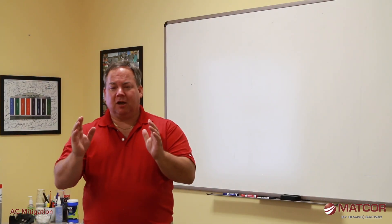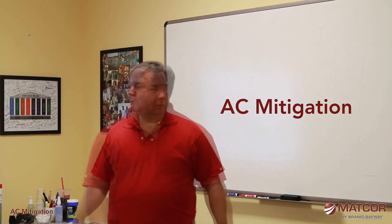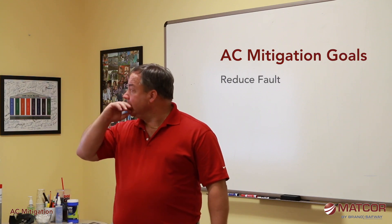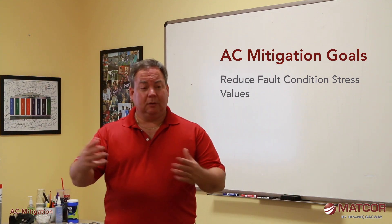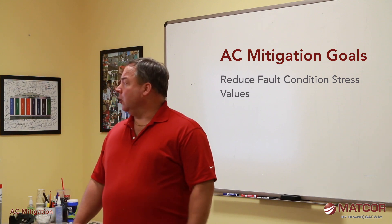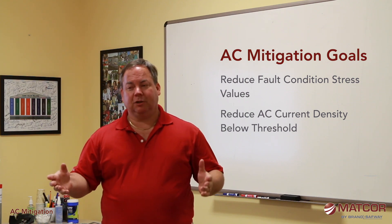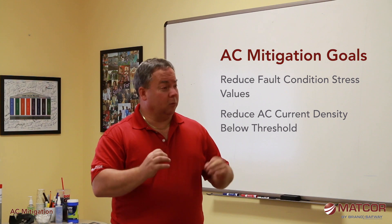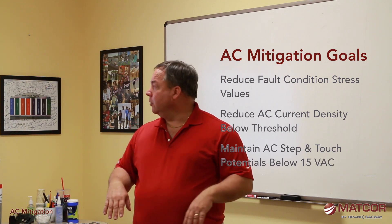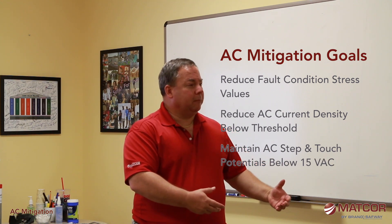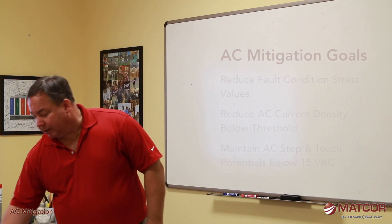We've talked about AC interference and AC modeling; next we're going to talk about AC mitigation. The goal for AC mitigation is to reduce your fault condition stress values to protect against coating damage and arcing potentials. Arcing is less frequent because you have to be really close to the pipeline. We want to reduce the current density below some threshold value — typically in the US we use 20 amps per meter squared for a one centimeter squared nominal holiday size — and to maintain AC step and touch potential below 15 volts so that people working in and around pipeline areas are not subject to shock damage.